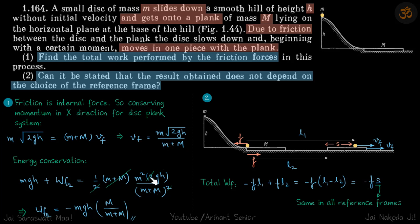So we'll just put this value and square it. And resolving we get the work done by the friction to be minus mgh into M/(m + M). And as expected it's negative.